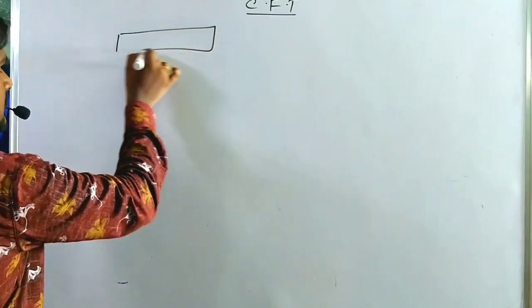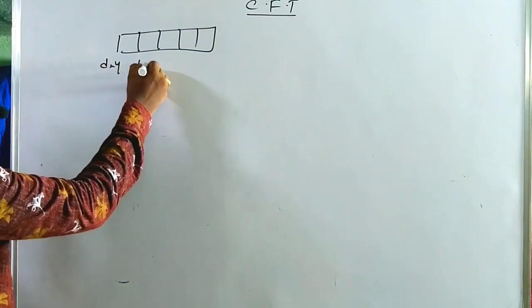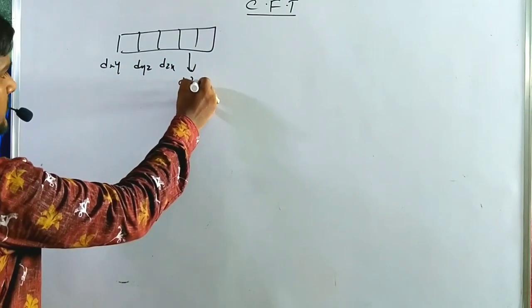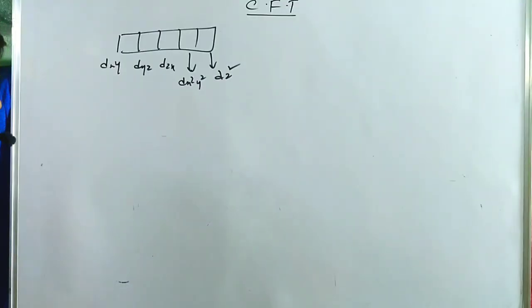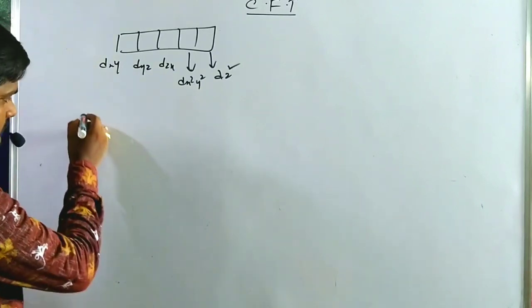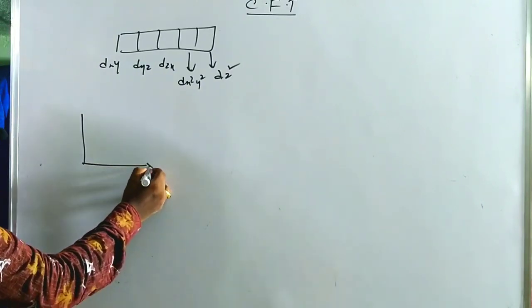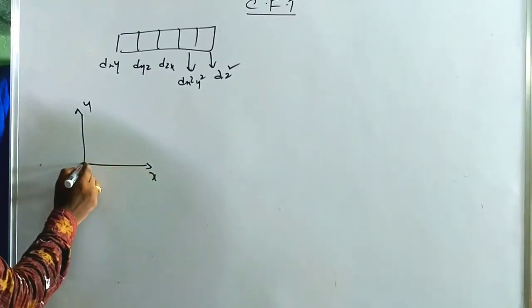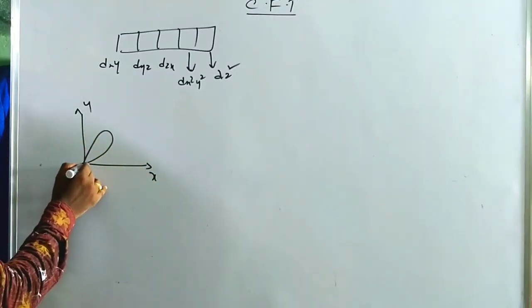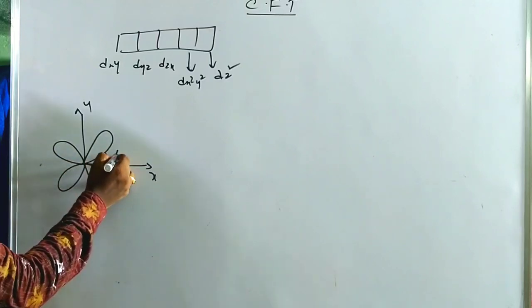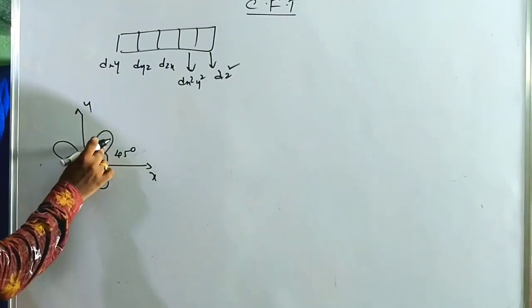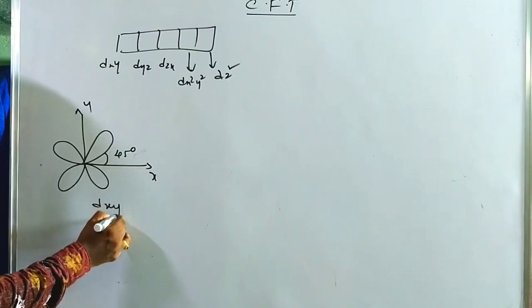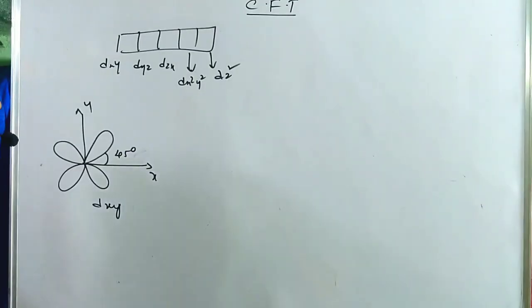The five d orbitals can be oriented as follows: d(xy) has double-dumbbell shaped lobes oriented between the x and y axes at 45 degrees, so it is called d(xy). Similarly, d(yz) has lobes between the y and z axes, and d(zx) has lobes between the z and x axes.